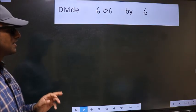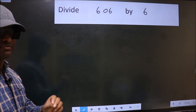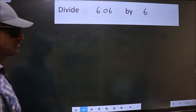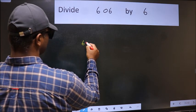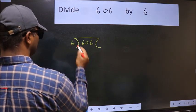Divide 606 by 6. To do this division, we should frame it in this way. 606 here and 6 here.